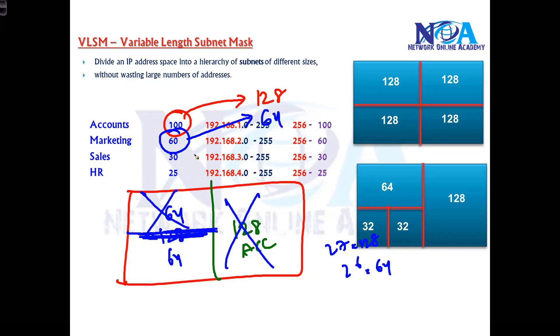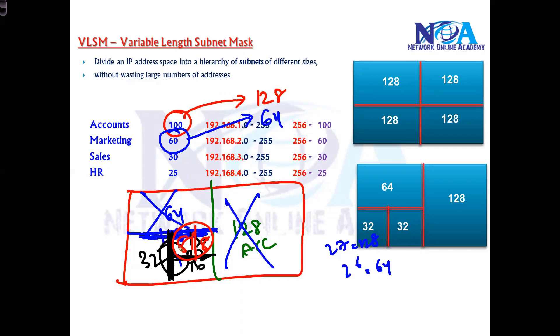In that remaining 64, I'll divide into two parts - either 32 and 32, or 32, 16, and 16, or further divide into 8, 8, 8, etc. We keep dividing and allocating based on needs.